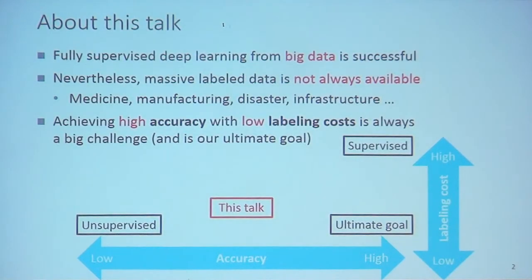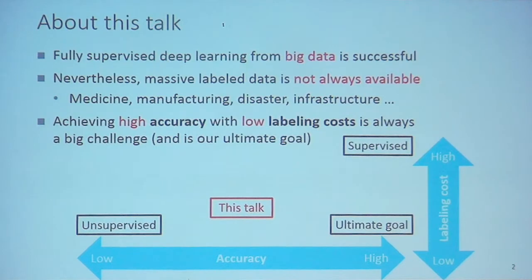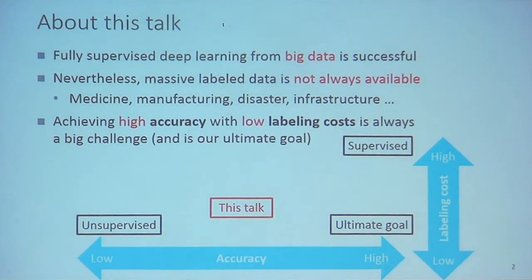We all know that fully supervised deep learning from big data is successful. However, in society there are many fields where we cannot obtain a lot of labeled data. Our goal is to achieve high accuracy with low labeling cost, and this is our ultimate goal.